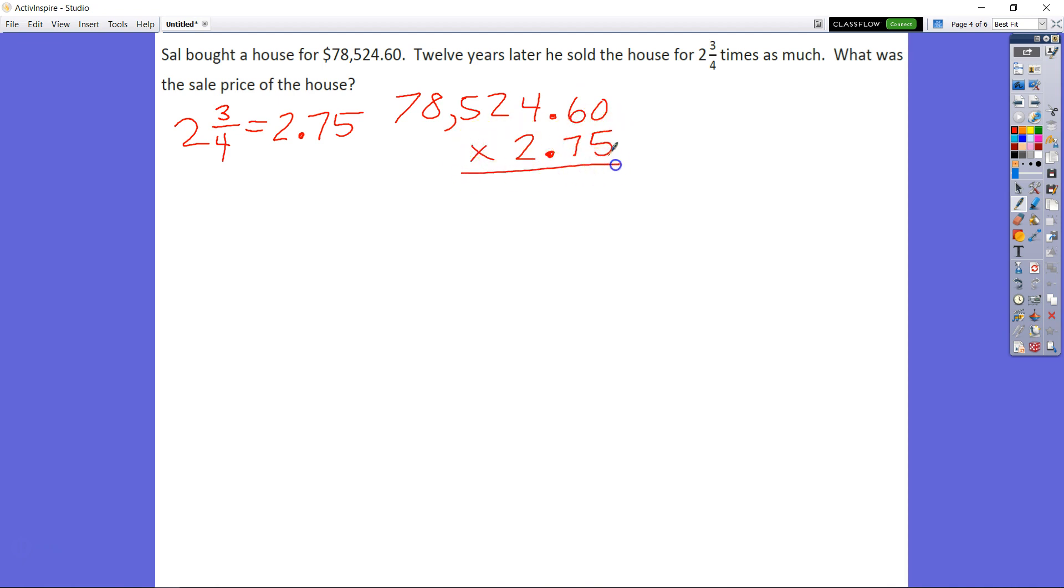So we know that in order to do this, let's just go ahead and turn this into a decimal. 2 and 3 fourths is equal to 2.75. So we're going to multiply our total purchase price times the increase amount. It increased 2.75 times. We know we have 2 digits after the decimal, so we have to multiply by 100 to get rid of that. So let's go ahead and multiply that out.